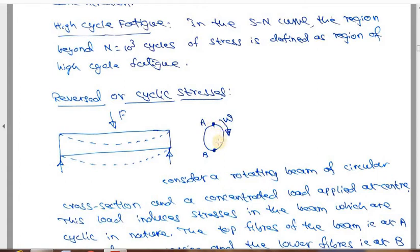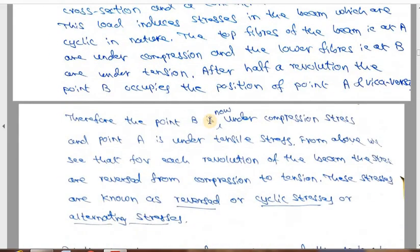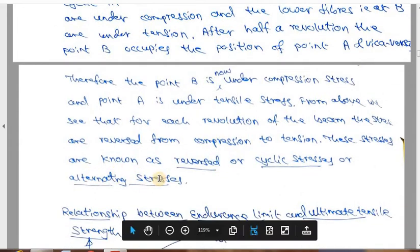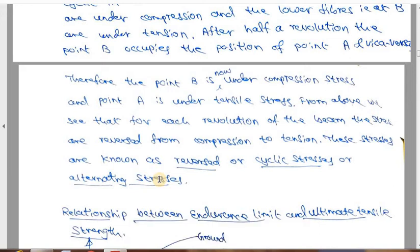When point A comes to the bottom position, it is now in tensile condition. Point B, which was tensile, moves to the top and becomes compressive. So the same point experiences tensile and then compressive stress for one complete cycle. This kind of loading is called a reversed or cyclically loaded member — alternatively, for every half rotation, tensile stress becomes compressive and compressive becomes tensile. This is what we call alternating stress.